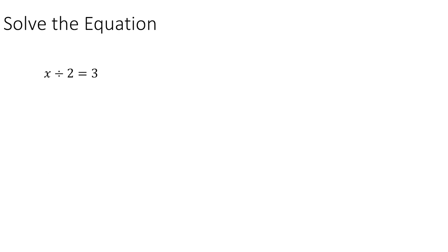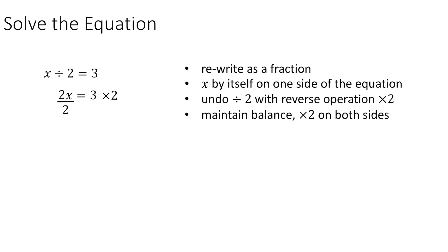Here with a division operator, x divided by 2 is equal to 3. The opposite operation for division is multiplication. So we're going to multiply the left-hand side by 2. But then we also have to multiply the right-hand side by 2 because we always have to keep that balance. So on the left-hand side, the 2 divided by 2 will give 1, and on the right-hand side, we simplify 3 times 2 to be 6.